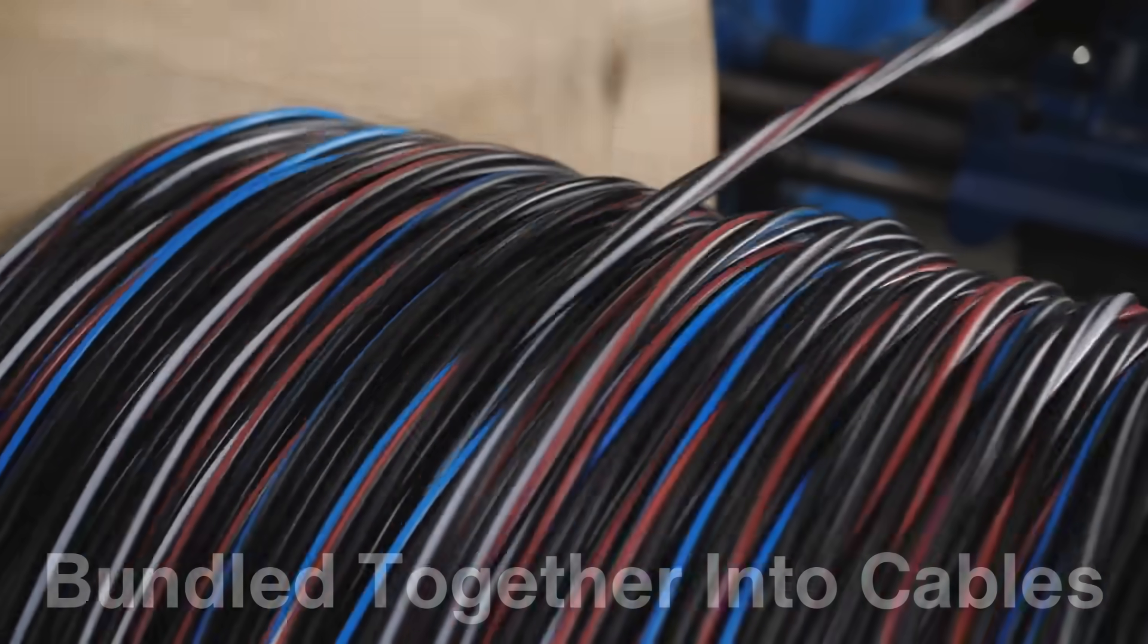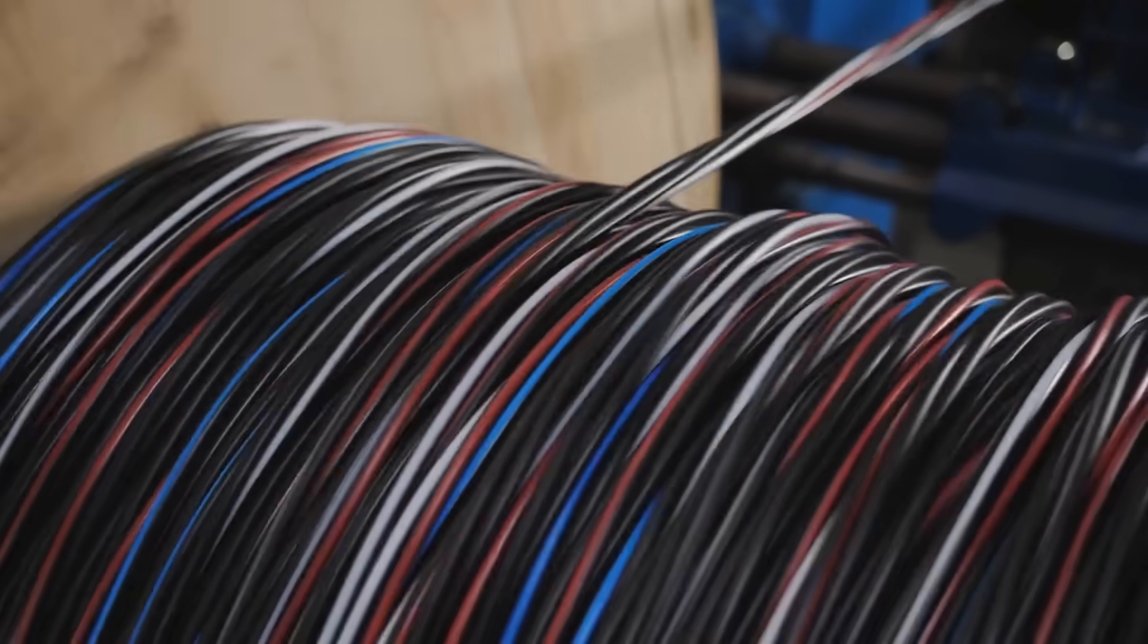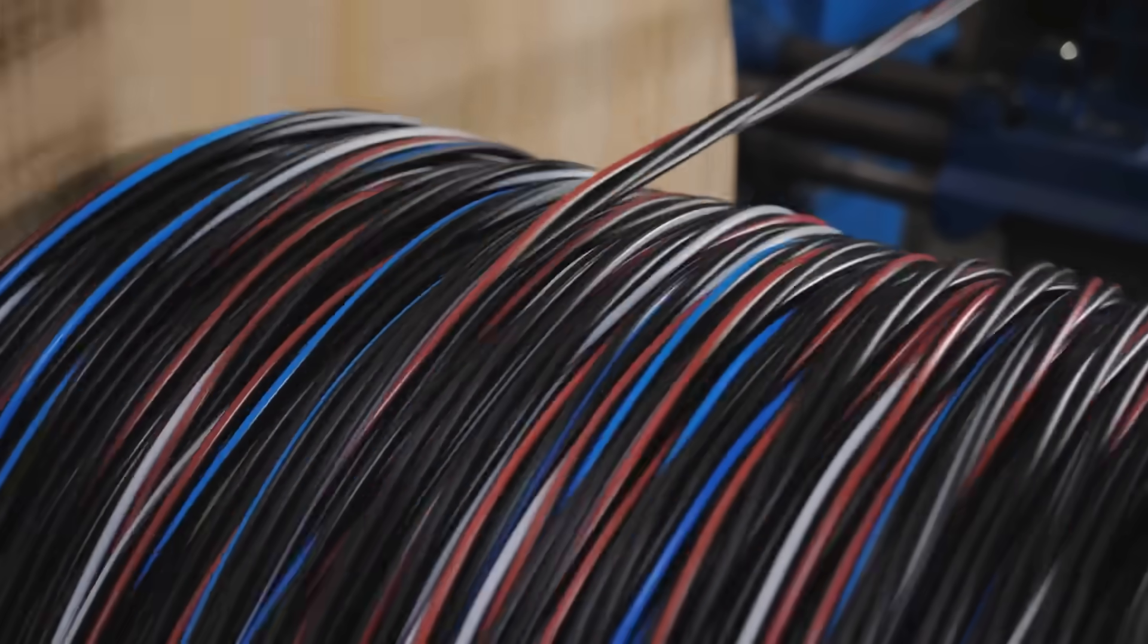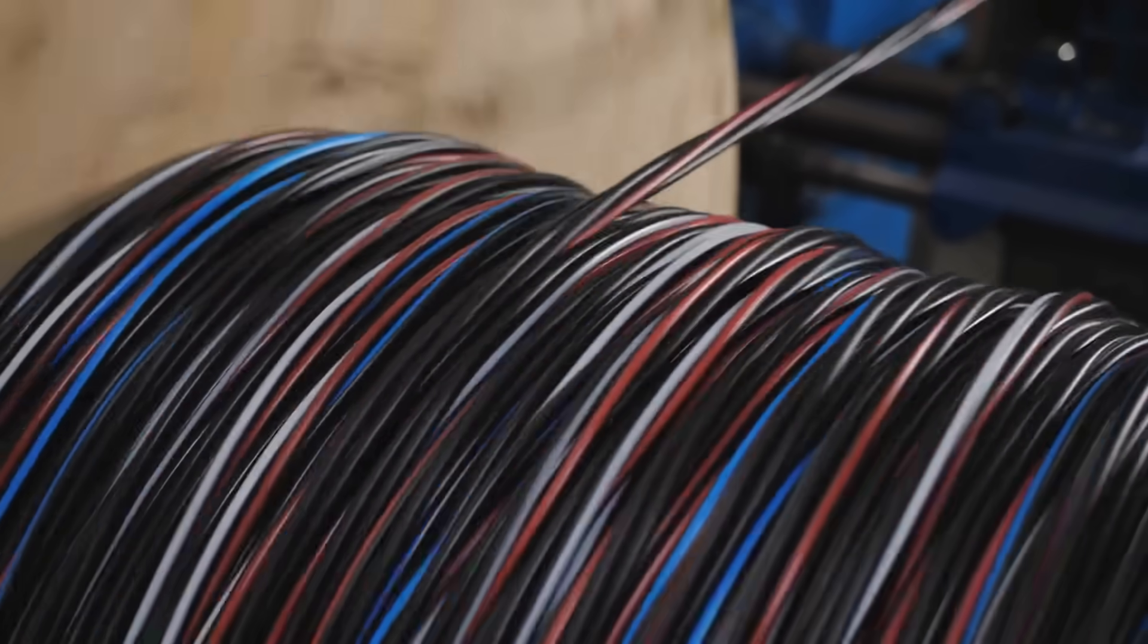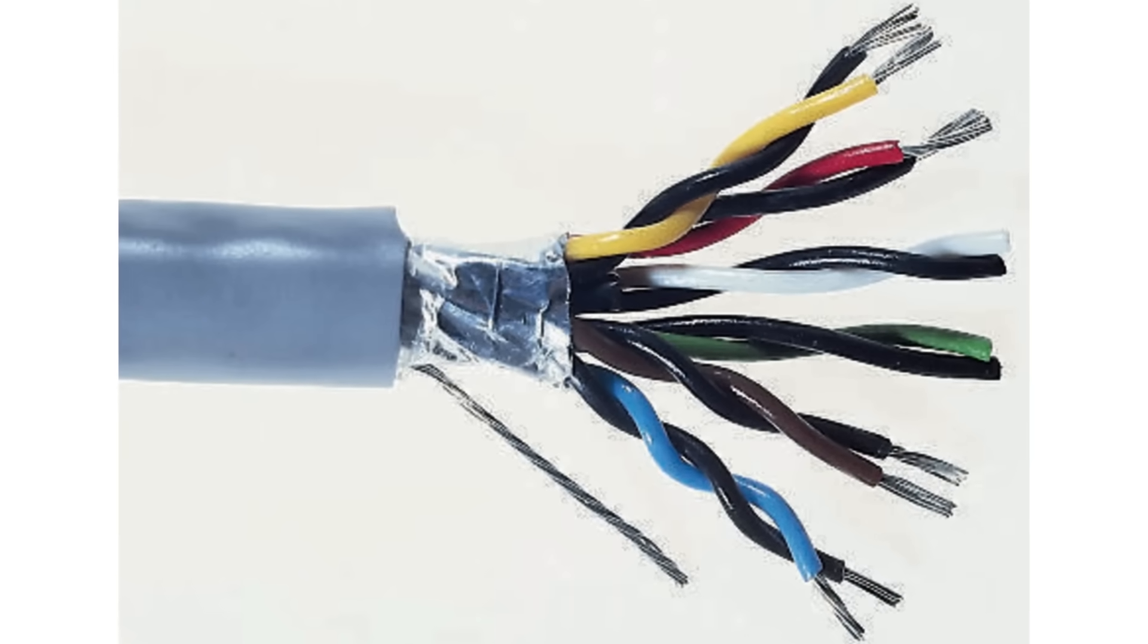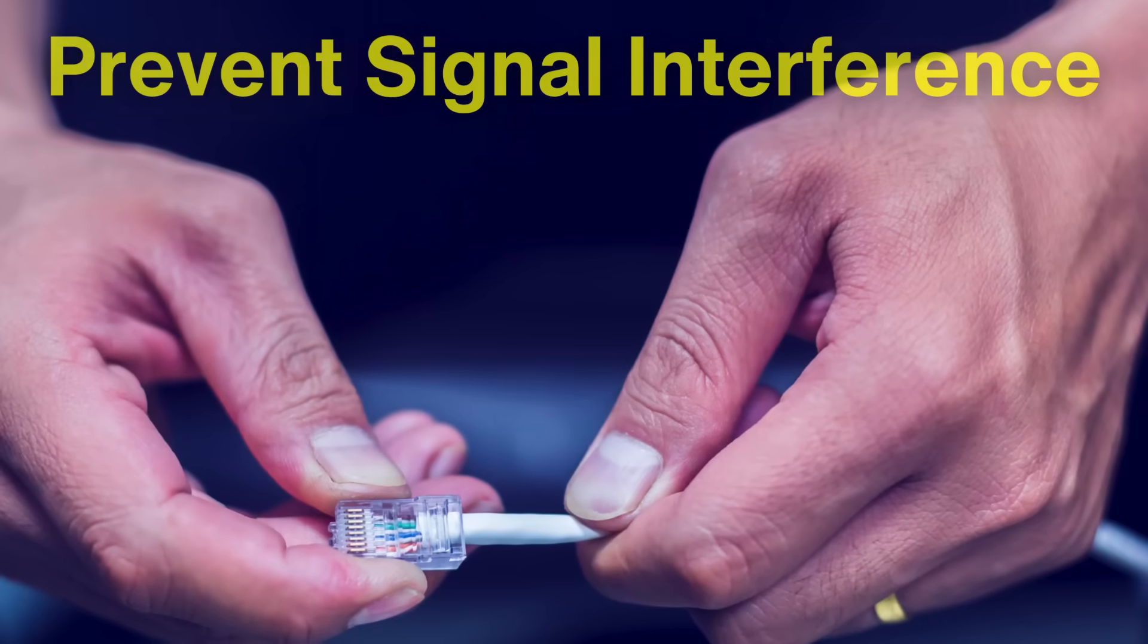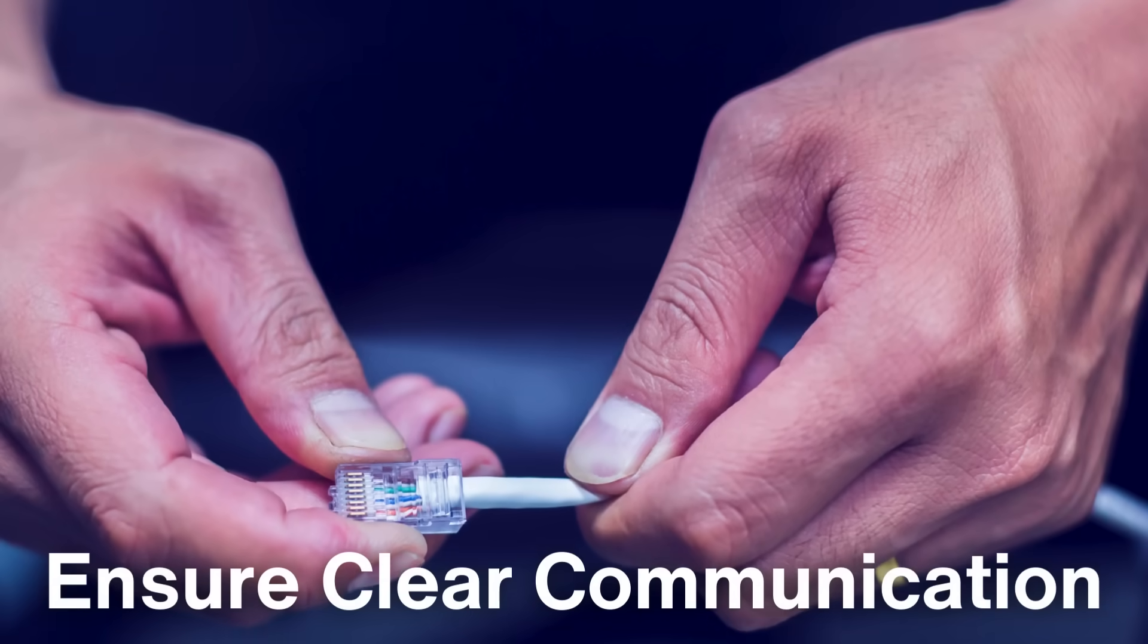Some wires are bundled together into cables, which involve grouping multiple insulated wires and enclosing them in an outer sheath for added protection. For example, the cables used in telecommunications might include several twisted pairs of insulated wires to prevent signal interference and ensure clear communication.